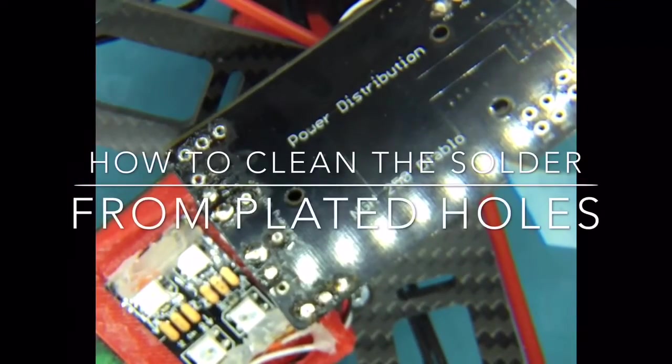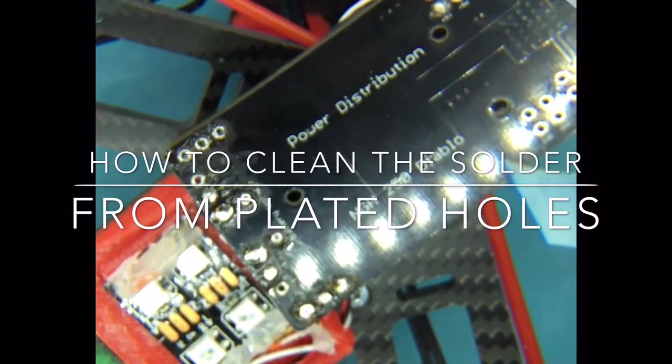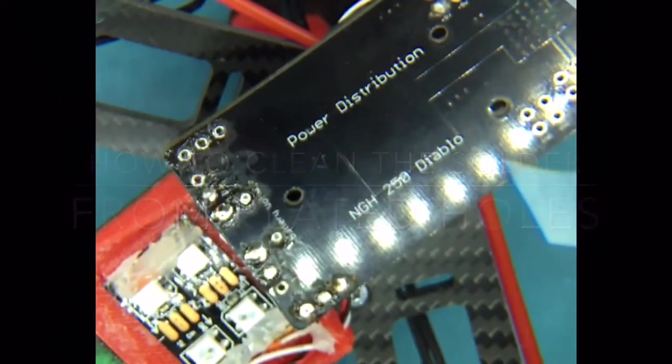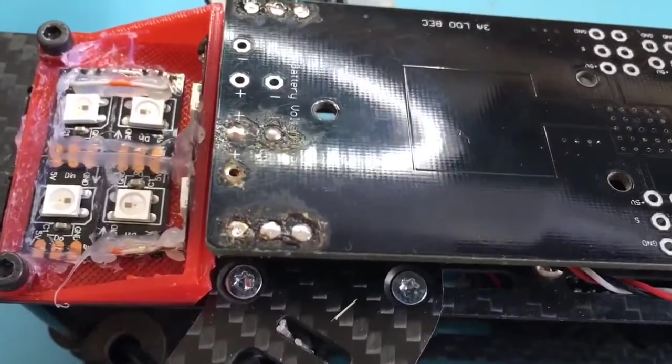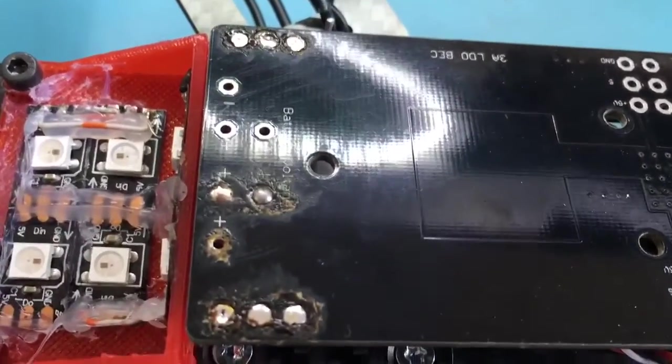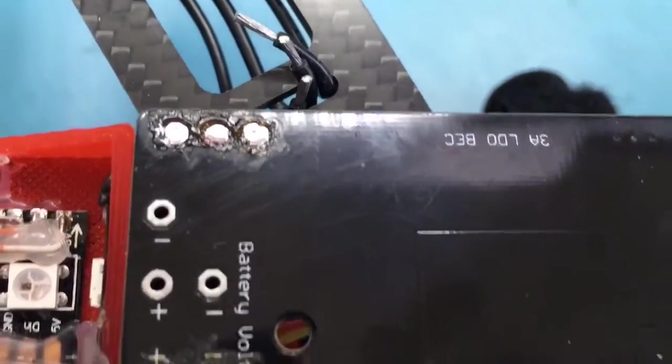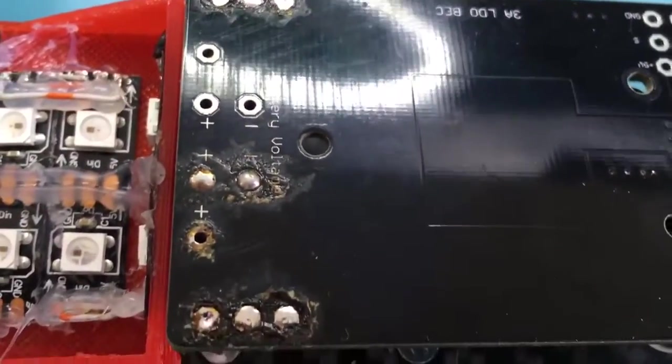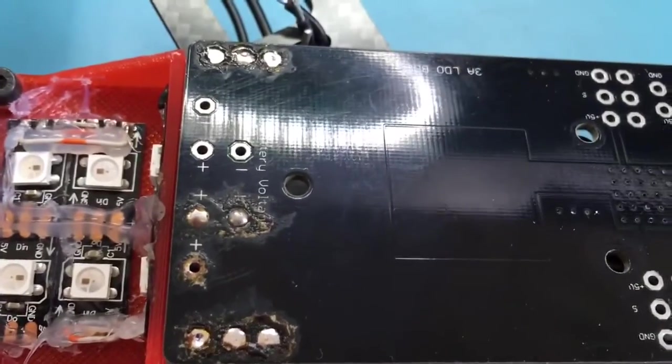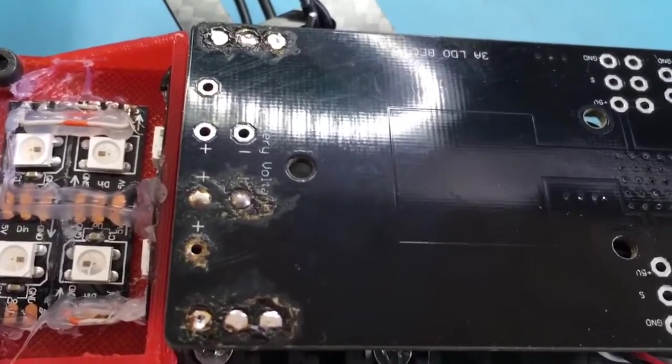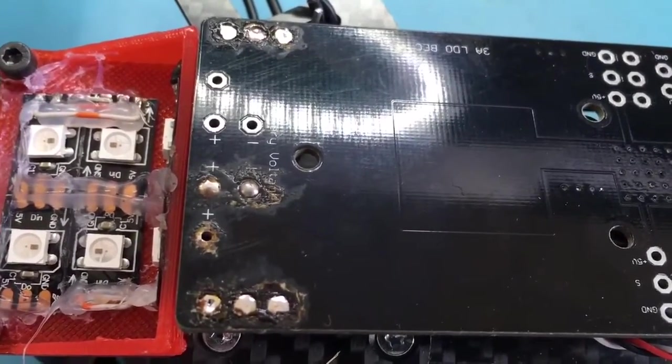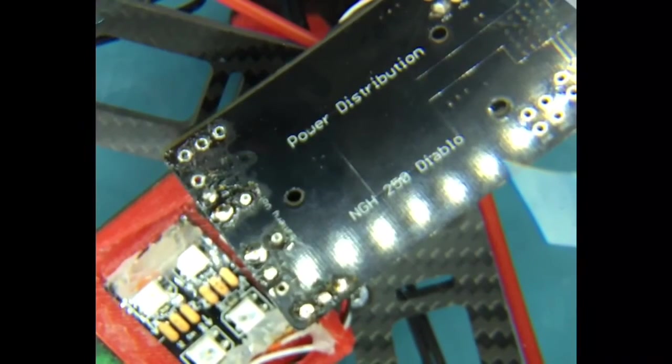I have been getting lots of questions about how to clean the holes up on a PCB board. This is how it looks before - you see some holes are filled with solder. Just follow the procedure in the next section of the video and I'll show you the results in a second.